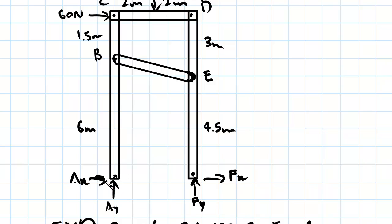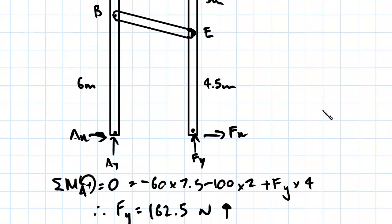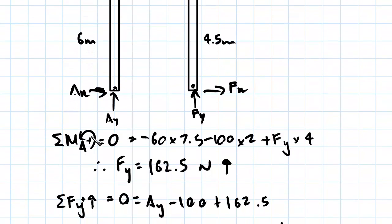You can see that both AX, AY, and FX all run through this line here, so they won't contribute to the moment. So if we go ahead with this calculation, we'll get moments about point A.